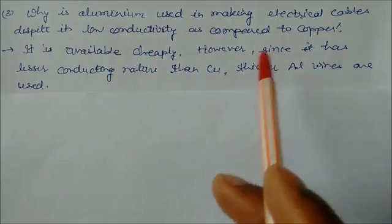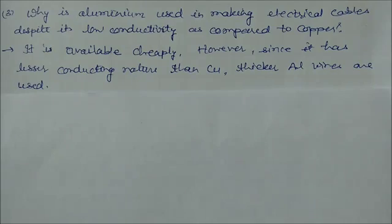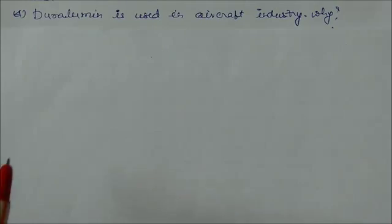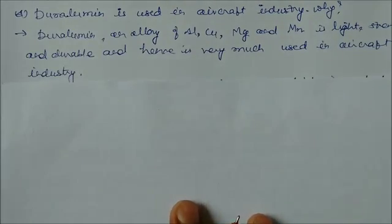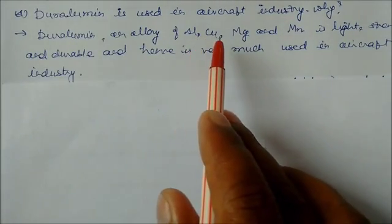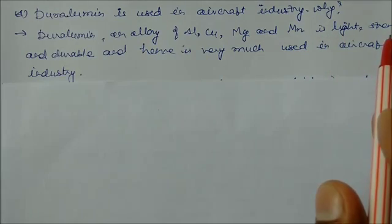Duralumin is used in aircraft industries. Duralumin is an alloy of aluminum, copper, magnesium, and manganese. It is light, strong and durable, and hence is very much used in aircraft industry.